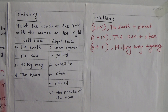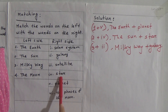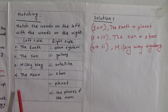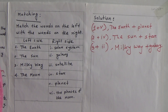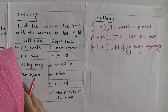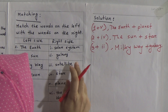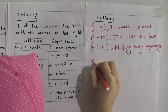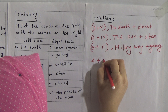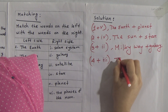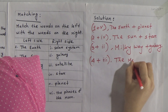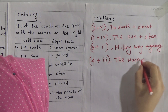Now come to number four: the Moon. The options are solar system, galaxy, satellite, star, planet, and phases of the moon. Dear students, we know the moon is a satellite. So number four will be matched with number three. Write '4 plus 3'. The Moon is matched with satellite.